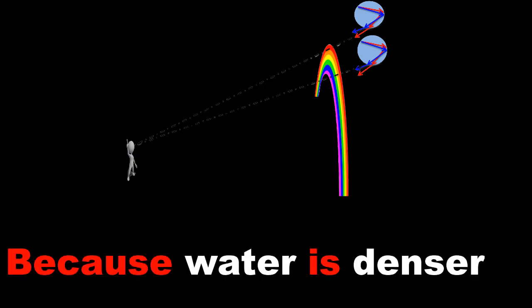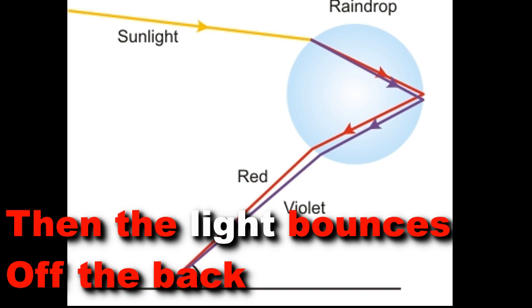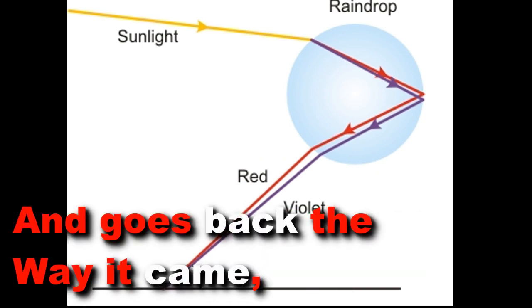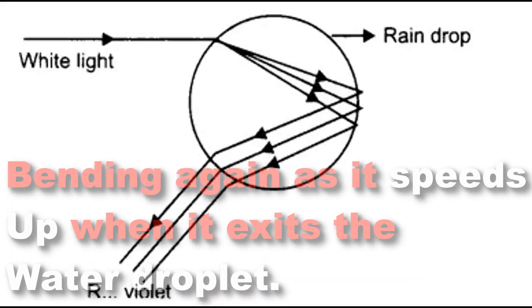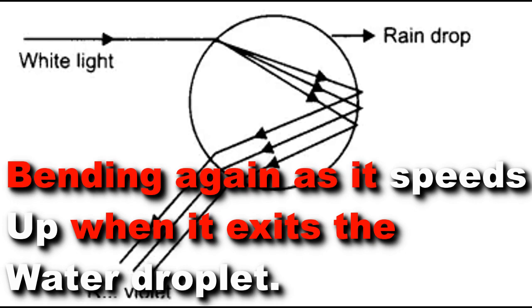Because water is denser, then the light bounces off the back of the water droplet and goes back the way it came, bending again as it speeds up when it exits the water droplet.